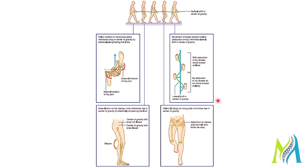During walking, many anatomical features of the lower limb contribute to minimizing the fluctuation in the body's center of gravity. When all joints and bones act together efficiently, this produces an efficient gait technique that keeps the center of gravity as stable as possible.